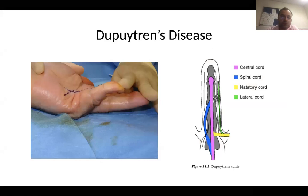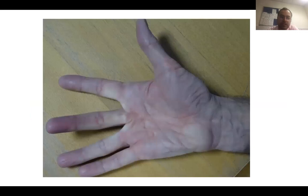Dupuytren's disease is very common in the UK. It's a fibroproliferative disease of the hand, and this can result in contracture of the digits, often the little and the ring finger, as demonstrated in the picture, and it affects the normal fascia of the hand. This gentleman has got a cord developing in his middle finger, and this is probably less than 30 degrees. If it's very mild disease and he may just have a few nodules in his palm, it's probably not necessary to refer him on.